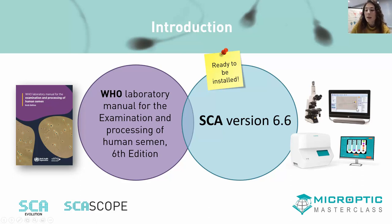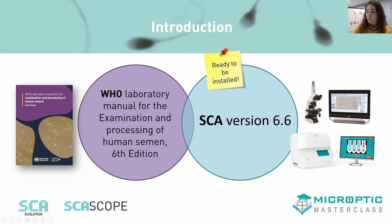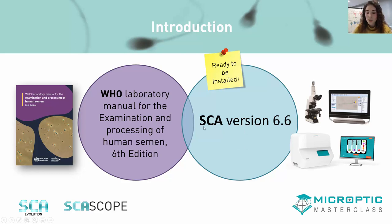We have two CASA systems that you already know: the SCA Evolution, which is our open system composed of a camera, a microscope, and a computer with software; and secondly, our SCA Scope, which is a more closed and automatic system. This new version, SCA 6.6, is now ready to be installed.